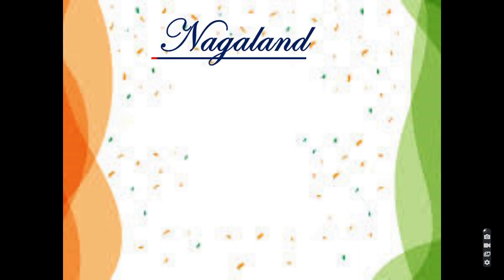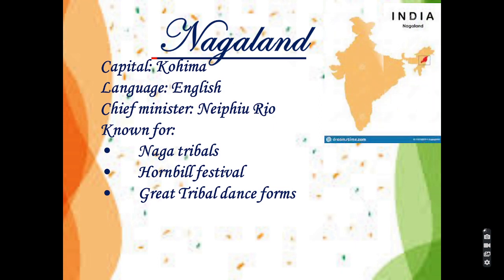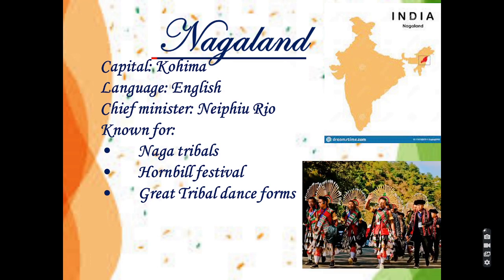Next state is Nagaland. Nagaland is a mountainous state in north-east India bordering Myanmar. Its capital is Kohima. The language used in Nagaland is English. The chief minister of Nagaland is Neiphiu Rio. Nagaland is known for its Naga Tribals, Hornbill Festival, and great tribal dance forms. You can see the great tribal dance forms in the picture.